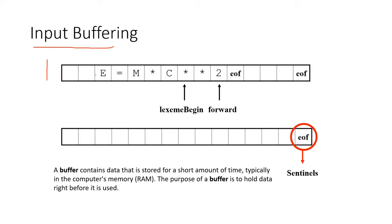We have a single input like E = M * C * * 2, and then we get the EOF, that is end of file. Here it's end of line. This EOF is also known as the sentinel.